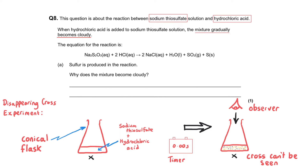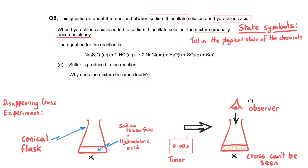The equation for the reaction is shown here. We have sodium thiosulfate on the left-hand side reacting with hydrochloric acid, making sodium chloride, water, sulfur dioxide, and sulfur. We've been given the state symbols for each of them.